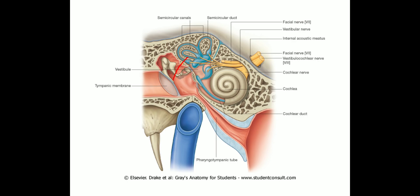If we do a fistula test by applying pressure on the tragus, that pressure is transmitted from the external auditory canal to the middle ear and then to the inner ear — specifically to the membranous labyrinth of the lateral semicircular canal — causing stimulation. The endolymph flows towards the cupula — that is called ampullopetal flow of the endolymph. This causes excitation of the lateral semicircular canal and the patient presents with vertigo and nystagmus with the quick component of nystagmus towards the affected ear.